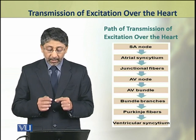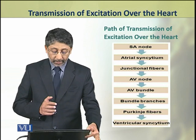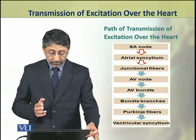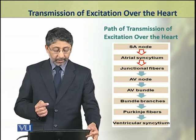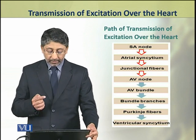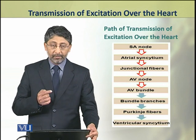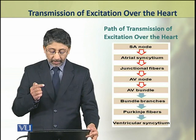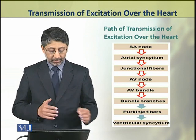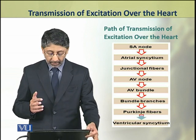We shall have an overview of the path of transmission of excitation over the heart. The excitation generated in the sinoatrial node is first transmitted to the atrial myocardium. From the atrial myocardium, through junctional fibers, it is transmitted to the atrioventricular node. From here, the excitation is transmitted to the atrioventricular bundle, or bundle of His, then to the right and left bundle branches, then to the Purkinje fibers, and finally to the ventricular musculature.